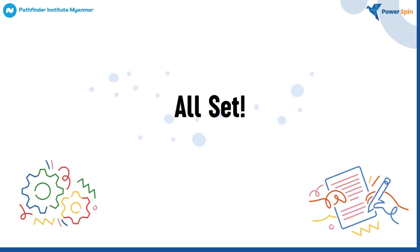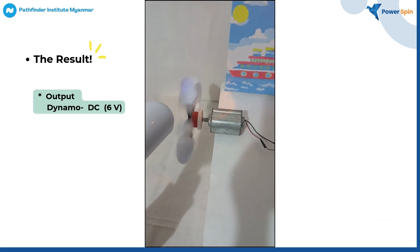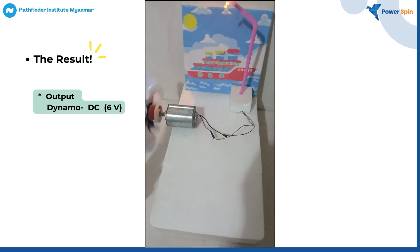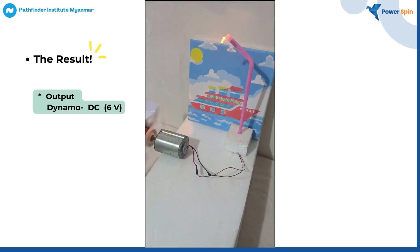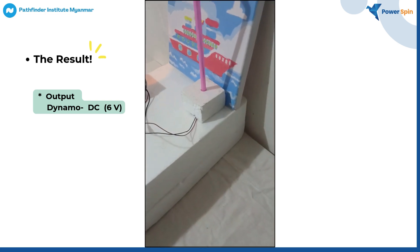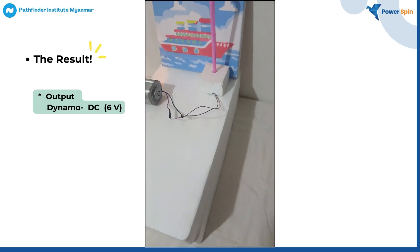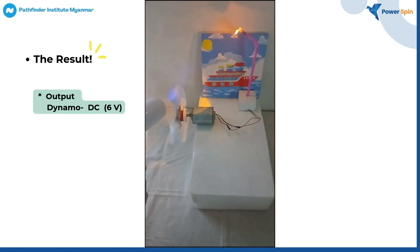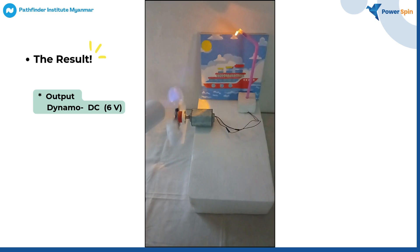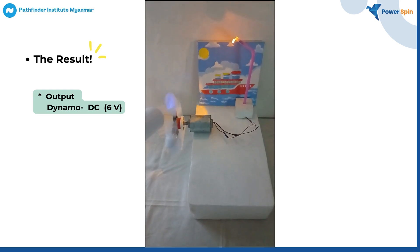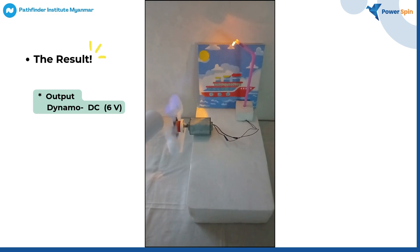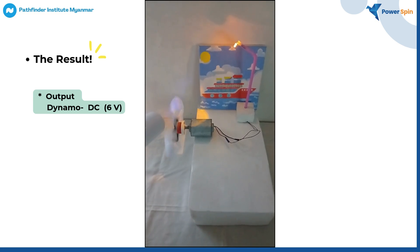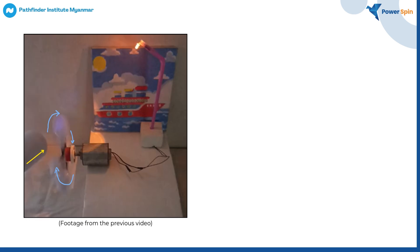Now that everything is settled, let's check out the results. As I mentioned earlier, the dynamo I used has 6V. In the video, we saw that the light lights up when the wheel is going this way.